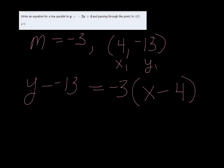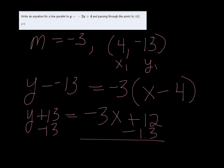And then I can change this to y plus 13 and distribute, so I get negative 3x plus 12 and subtract 13 from both sides. So my equation is y equals negative 3x minus 1.